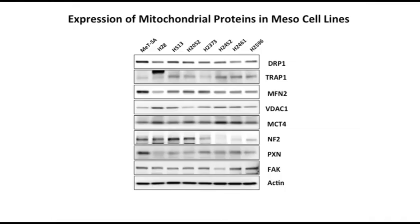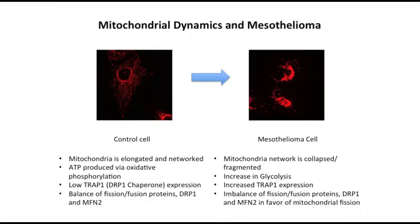Here are some mitochondrial proteins that can be abnormal in mesothelioma cell lines. MFN2 is important because it causes fusion of the mitochondria. DRP1 is important because it can cause fission of the mitochondria. Other proteins are related to mitochondrial function, as well as cytoskeletal proteins such as FAK and paxillin. In the control cell, mitochondria are elongated in network and ATP is produced via oxidative phosphorylation, with low TRAP1 — the chaperone for DRP1. In mesothelioma, this is quite opposite: increased glycolysis and increased TRAP1 expression.